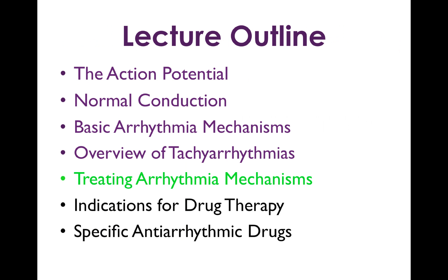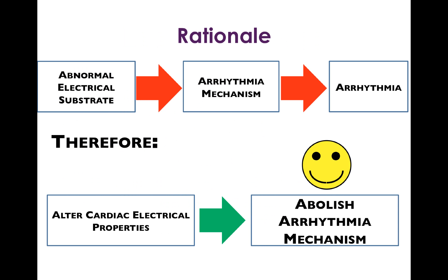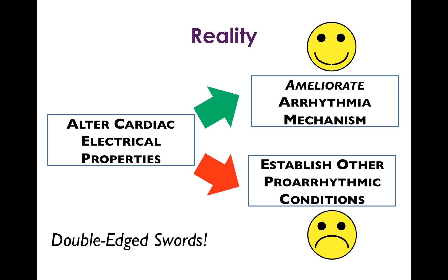That's the conceptual basis of how to treat arrhythmia mechanisms. Now, we're going to talk about specific indications for drug therapy. Not every electrophysiologic abnormality is amenable to drug therapy, so it's important to focus on the ones that drug therapy can actually be useful for. The general rationale is that you have an abnormal electrical substrate, which leads to one of the particular arrhythmia mechanisms, and that leads to arrhythmia. So if you can alter the cardiac electrical properties — either attack the arrhythmia mechanism directly or remove the electrophysiologic milieu that allows that arrhythmia mechanism to ensue — then you can abolish the arrhythmia mechanism.